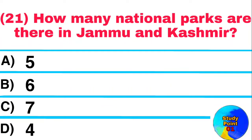Question: How many national parks are there in Jammu and Kashmir? Answer: Five.